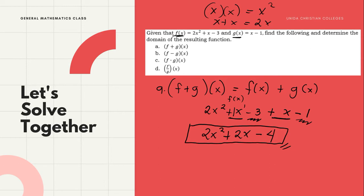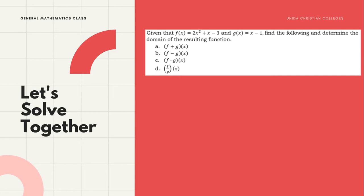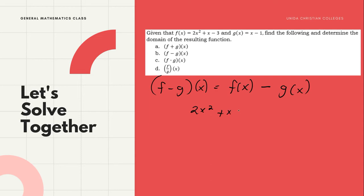Next, for letter B, we need to find (f-g)(x). (f-g)(x) is denoted by f(x) minus g(x). So, f(x) is 2x² + x - 3.